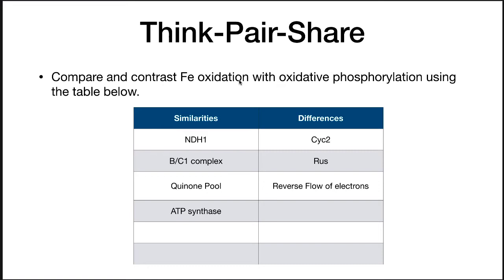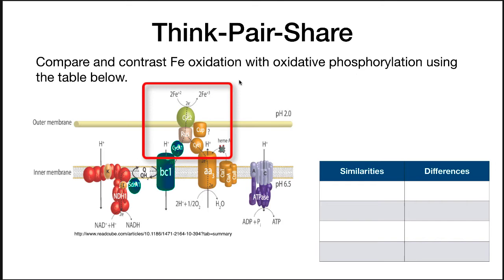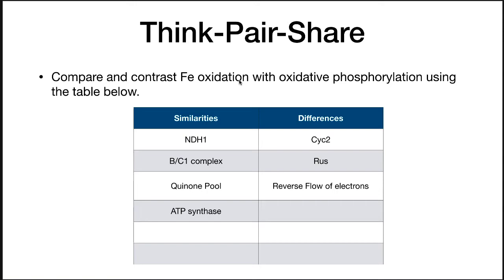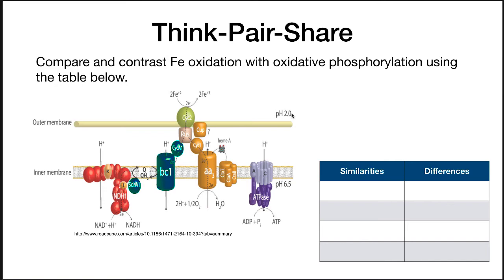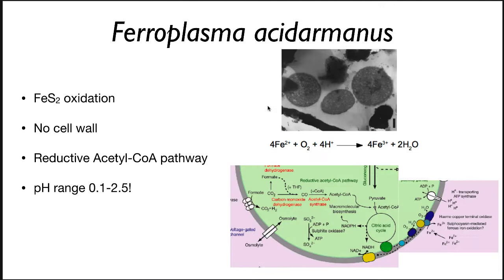The NADH dehydrogenase complex is similar to oxidative phosphorylation, as is the BC1 complex. You have a quinone pool and ATP synthesis — all very similar. The differences are in the periplasm and outer membrane: CYC2, RUSS, and interestingly the reverse flow of electrons through the BC1 complex, quinones, and NADH dehydrogenase. You're actually making NADH by running in this direction, because they have a giant proton gradient from pH 2 to pH 6.5 to drive that synthesis.